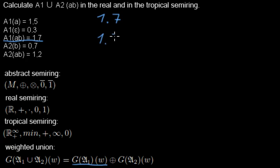I need this for both lines because I want to calculate it for the real and for the tropical semi-ring. Then what I need is the weight for this word in the second automaton. So in this case this is 1.2.